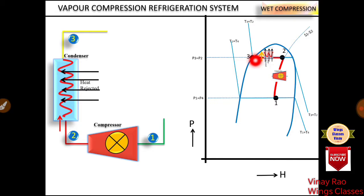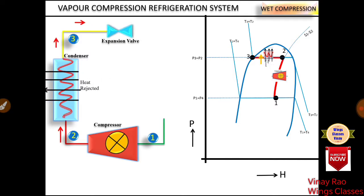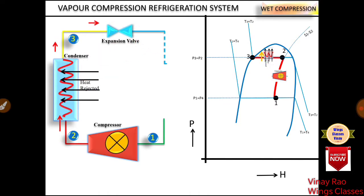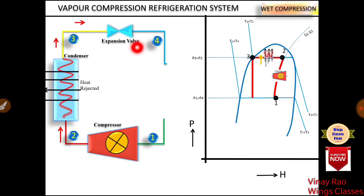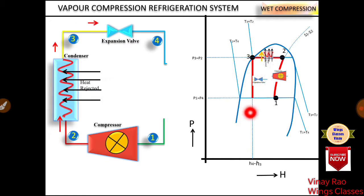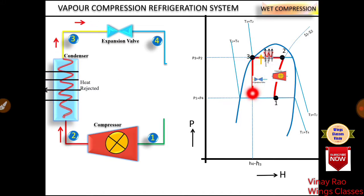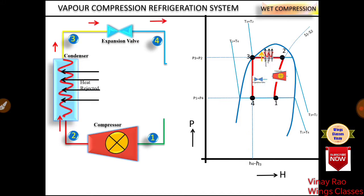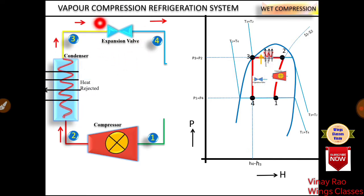From 3 to 4 there is an expansion valve working on an isoenthalpic process, meaning enthalpy is constant. The process 3 to 4 follows an isoenthalpic line, which is a straight vertical line because enthalpy is the same at point 3 and point 4. The expansion valve works on a constant enthalpy process, so 3 to 4 enthalpy is constant.